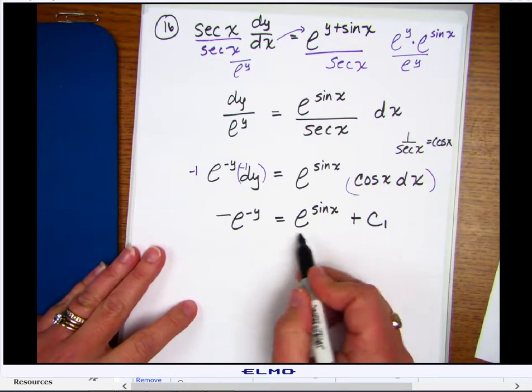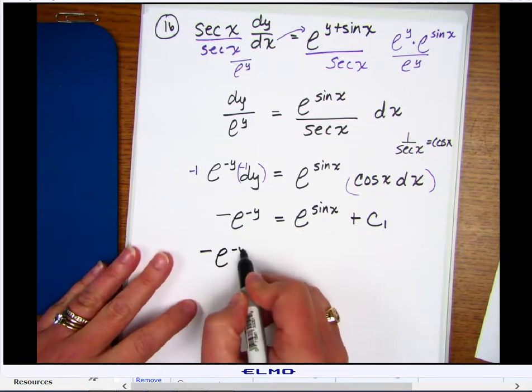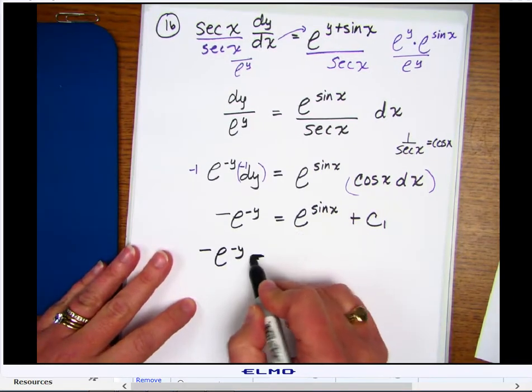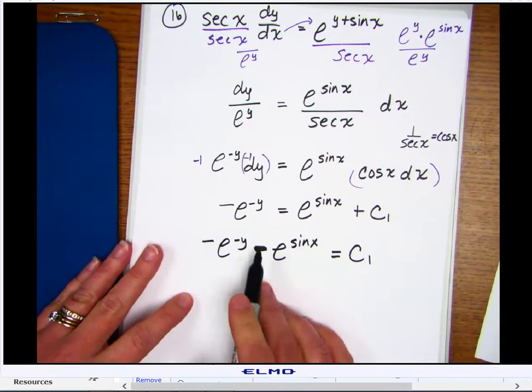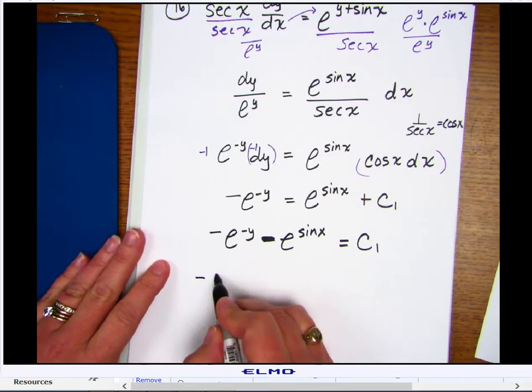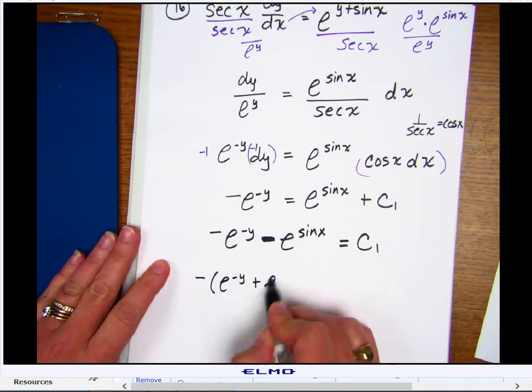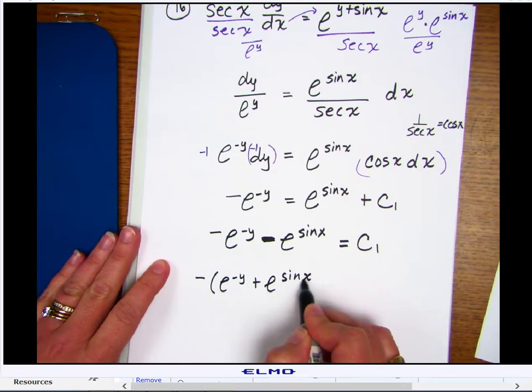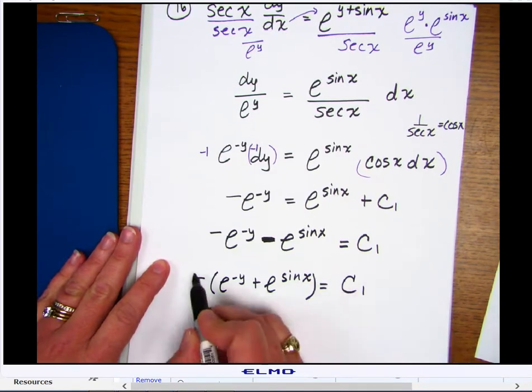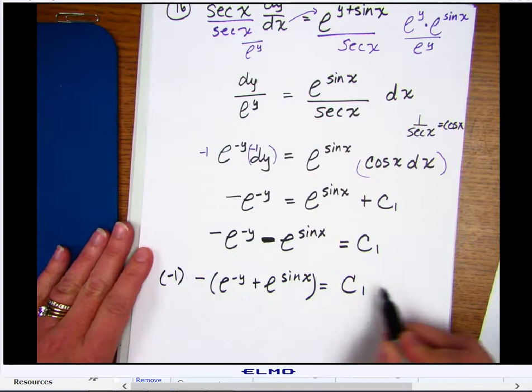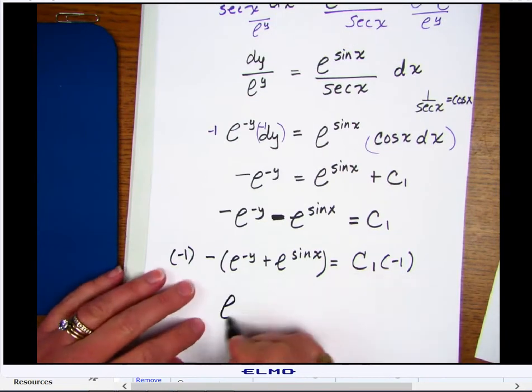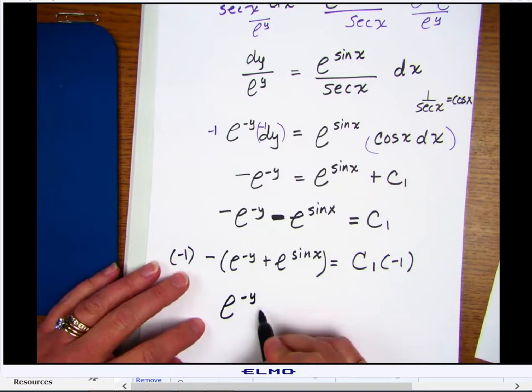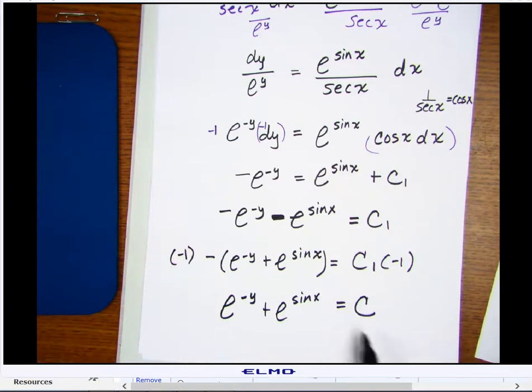And now, cleaning this up a little bit, I'm just going to subtract e to the sine of x from each side. That would be equal to c1. And now, if I wanted to, I can factor out a negative 1. But now, if I want to get rid of it, I can multiply both sides by negative 1. In other words, this sign would just get absorbed into this constant. So my final answer would be e to the minus y plus e to the sine of x equals just some constant c.